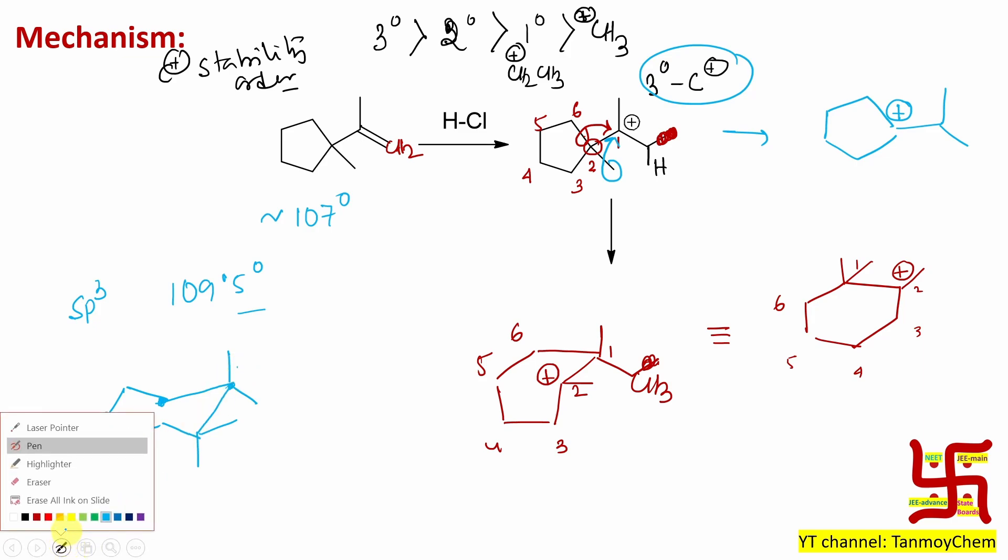So actually this is the carbon. Now I guess you will agree with me that the bond angle is closer to 109.5 degrees. Actually here the ring strain is minimum because the bond angle is close to the ideal bond angle for sp3 hybridization.